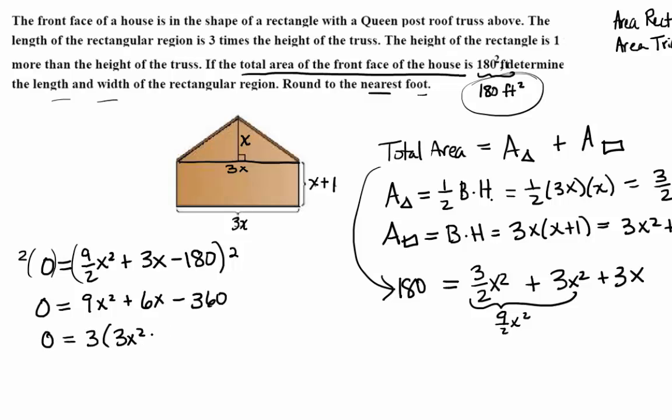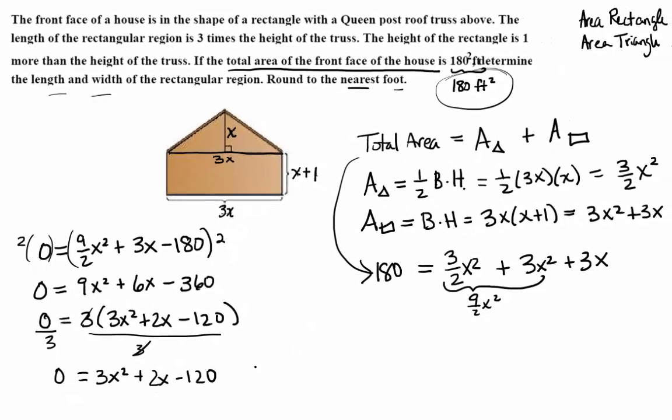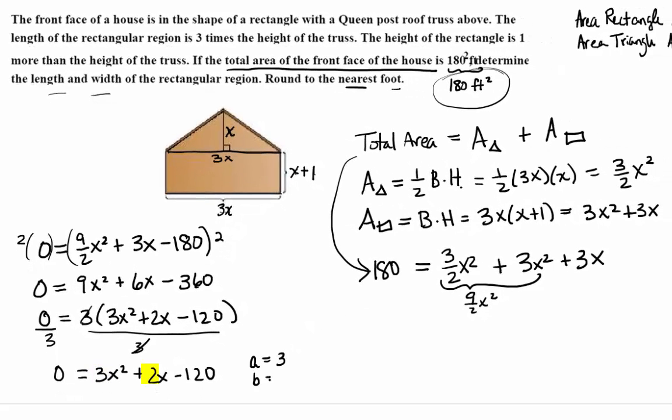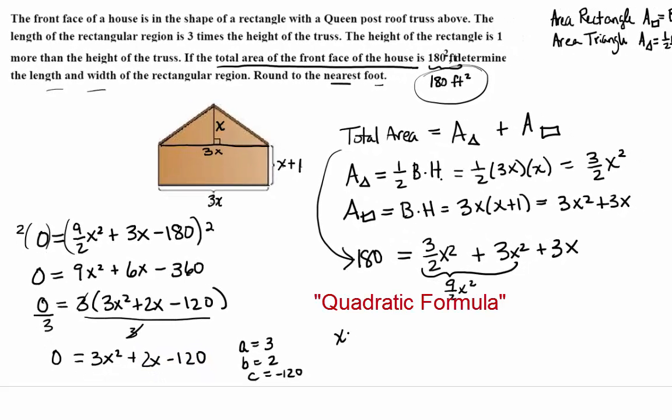Another thing you can do before you plug into the quadratic formula is you can factor out any common factors. These all have a factor of 3, for example, just to make the numbers a little bit smaller. Then you can divide both sides by 3. And we have 0 equals 3x squared plus 2x minus 120. You don't have to do either of these things, but it's something that makes your work a little easier. So now I'm going to use A is 3, B is 2, and C is negative 120.